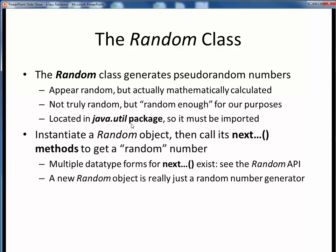The Random class is found in the java.util package of the Java API, so it first must be imported before it can be used. To use the Random class, as always, you would first instantiate a new random object, then call its various next methods to get some desired random number.